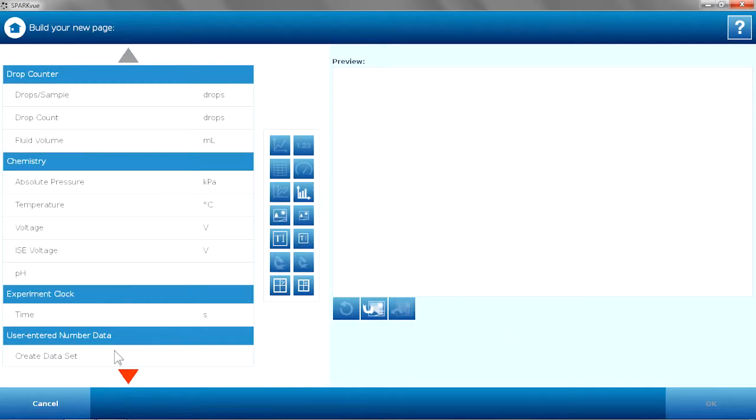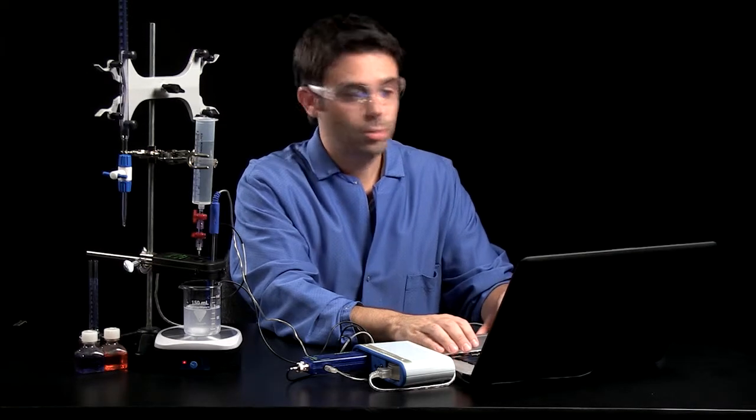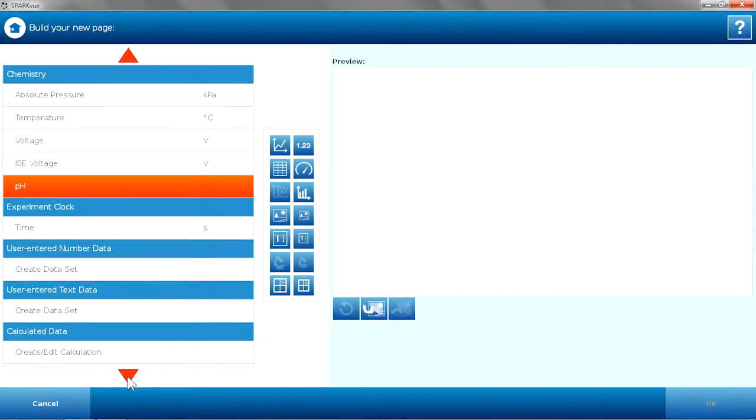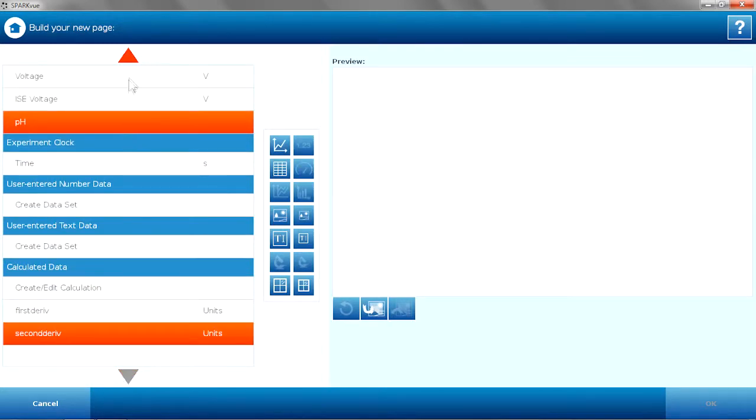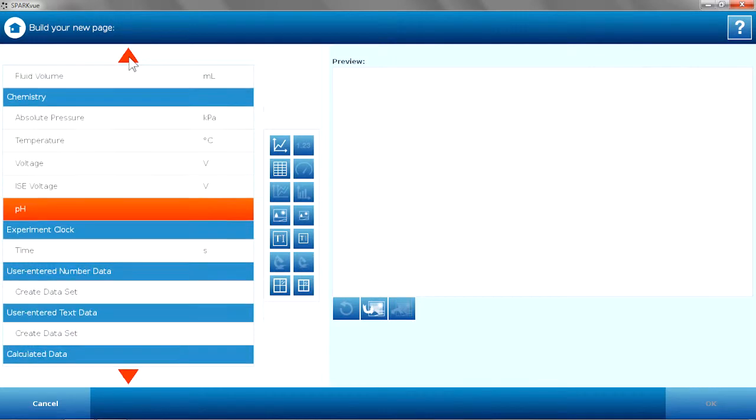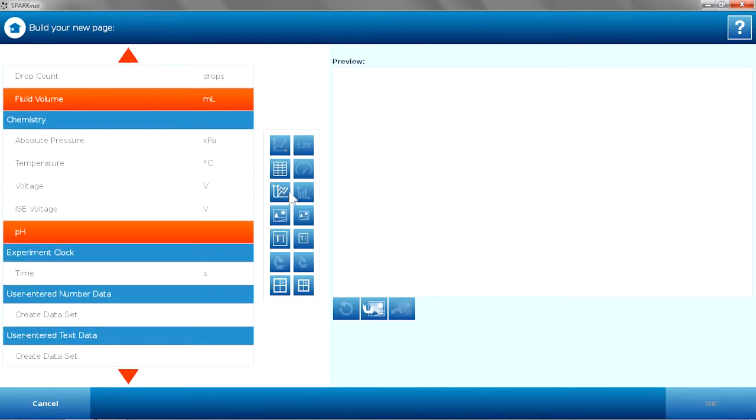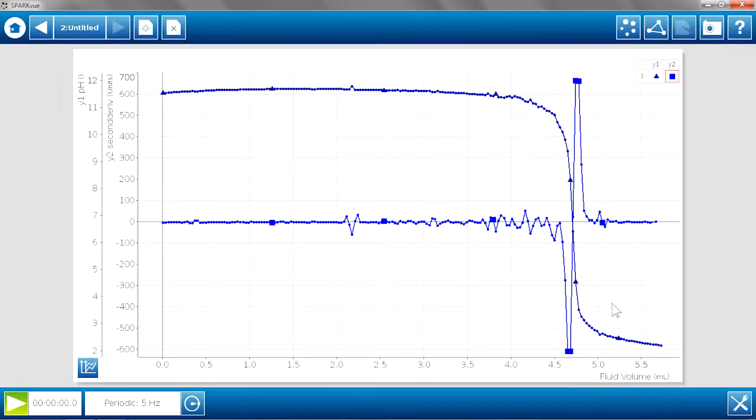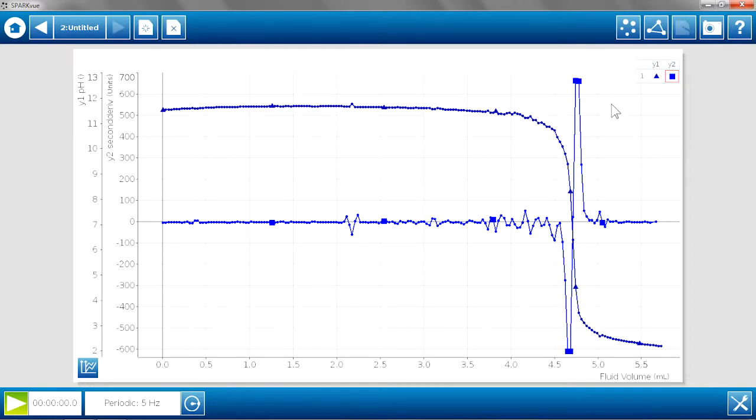And now I'm going to take advantage of SparkView's multiple y-axis. So I'm going to plot pH and the second derivative, both on the same graph, versus the fluid volume. Here's my multiple y-axis feature. And now we have both of those graphs coming in and showing you the equivalence point. The pH's equivalence point should be right around 7 because it was a strong acid, strong base. And the second derivative shows that by showing you where the plot crosses the 0. So we see a nice indication of the equivalence point using that second derivative.